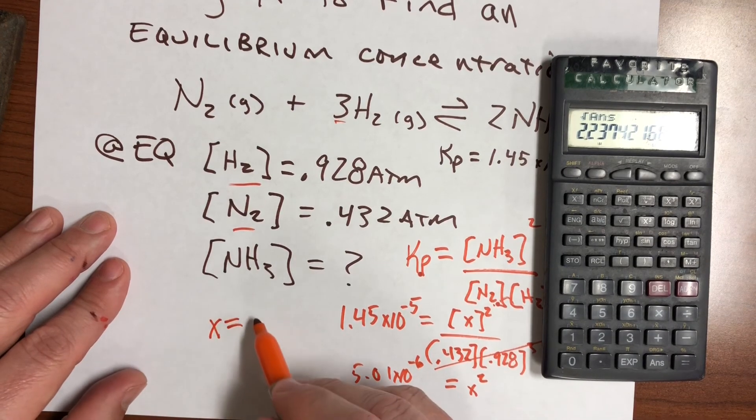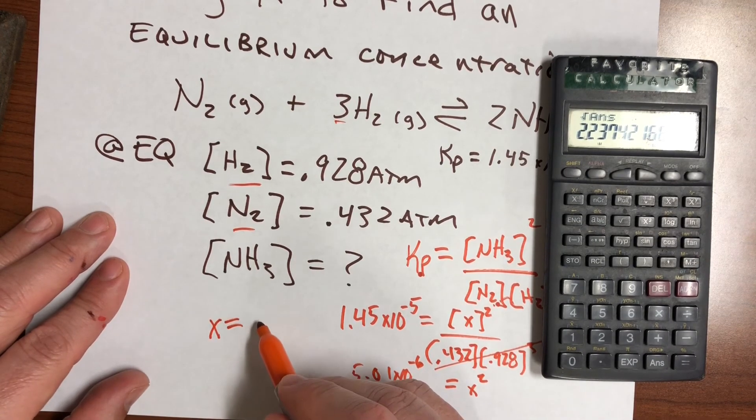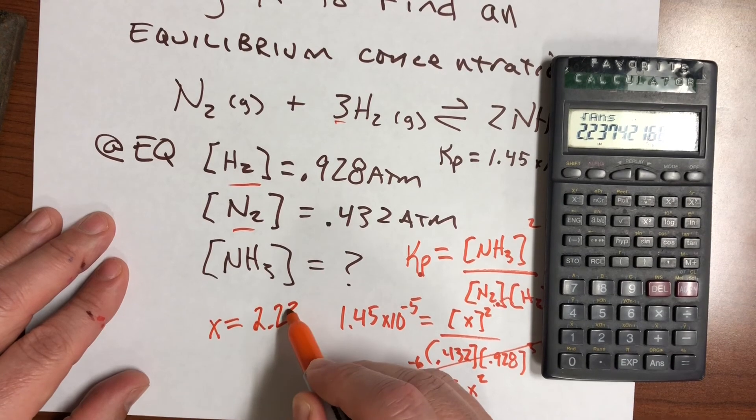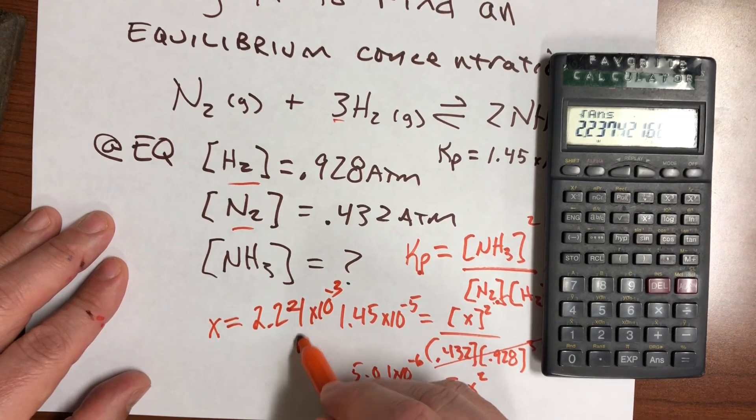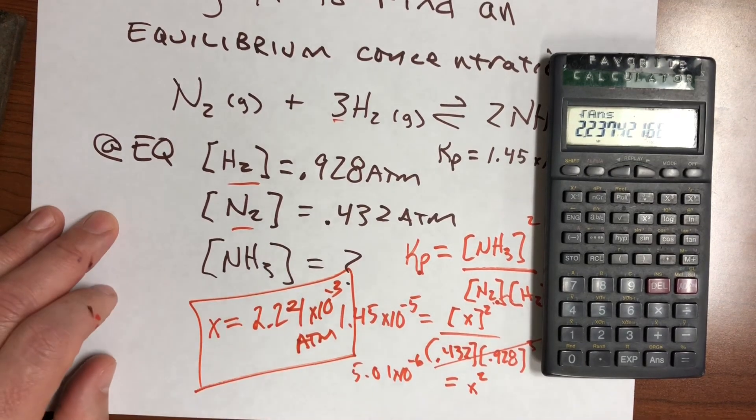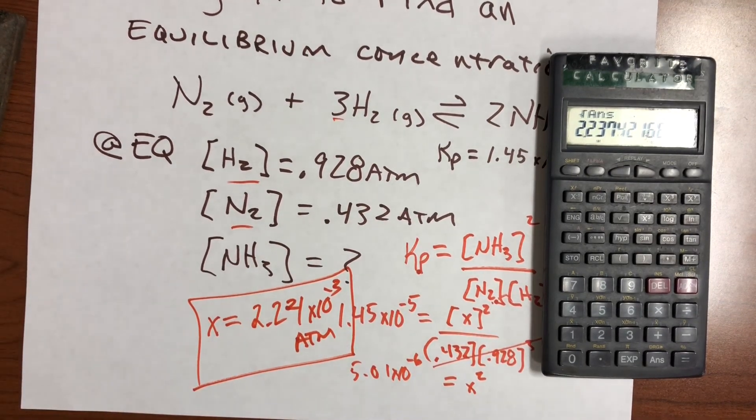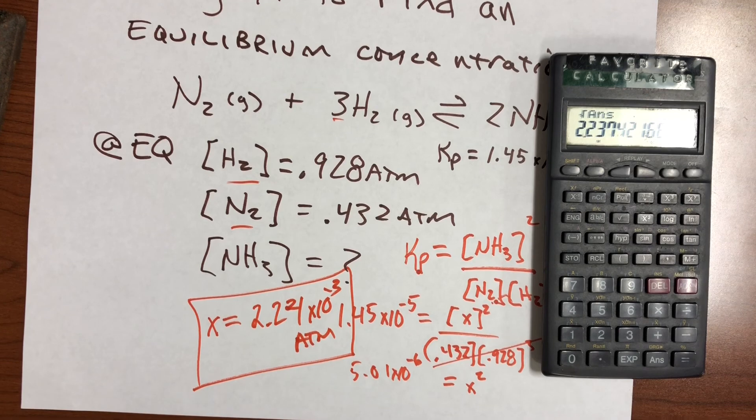And there you go. The amount of ammonia here is 2.24 times 10 to the negative 3rd atmospheres. And there you go. That is how you would do a problem like that.